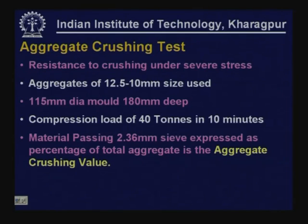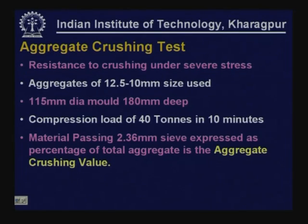The aggregate crushing test is normally used for cement concrete aggregates and measures resistance to crushing under severe stress. Aggregates of 12.5 to 10 mm size are placed in a 115 mm diameter mold to a depth of 180 mm. A compression load of 40 tons is applied gradually over 10 minutes. The material passing 2.36 mm sieve expressed as a percentage of total aggregate is the aggregate crushing value.